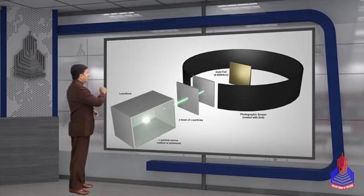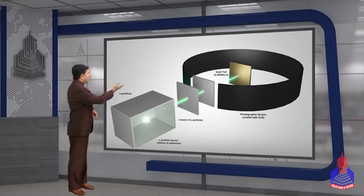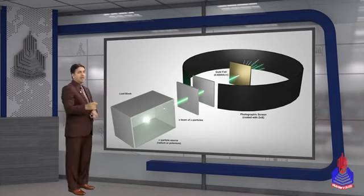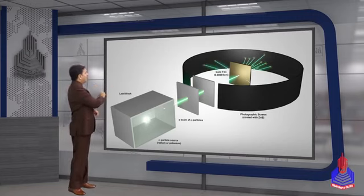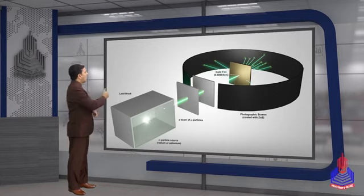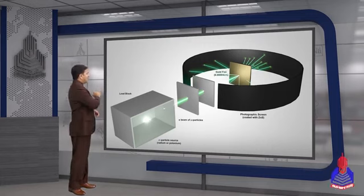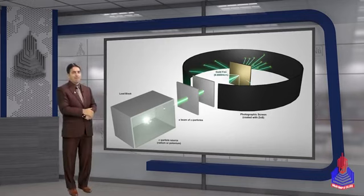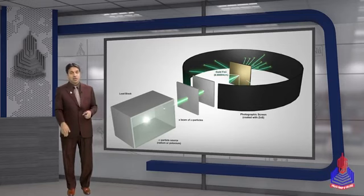Working میں دیکھیں: lead block سے alpha particles emit ہوئے، slit میں سے پاس ہوئے، ہمارے پاس beam of alpha particles آئی۔ جب یہ alpha particles thin metal foil سے strike کر رہے ہیں تو most of the alpha particles passed through the thin metal foil سیدھے گزر گئے۔ چند ایک different angles پر deflect ہوئے، اور کچھ ایسے بھی ہیں جو bounce back ہو گئے۔